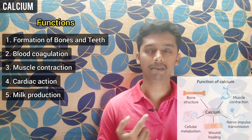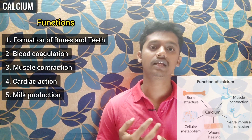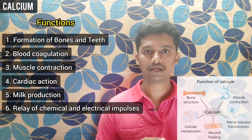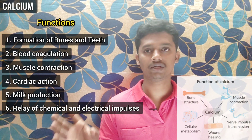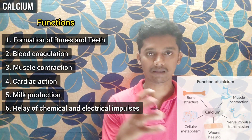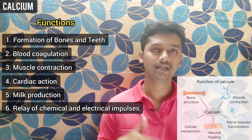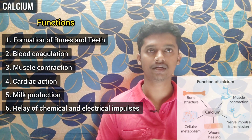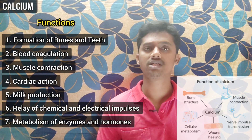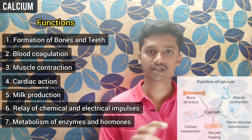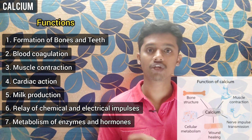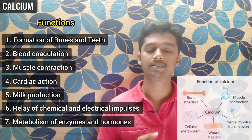Calcium also helps in milk production and in relaying electrical and chemical messages that arrive at a cell. Either an electrical message or a chemical message — calcium helps pass that message on. Calcium also plays a crucial role in the metabolism of enzymes and hormones.